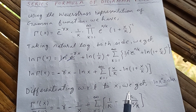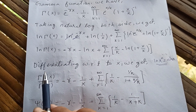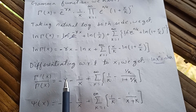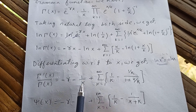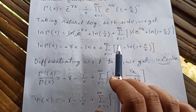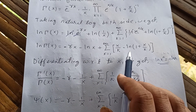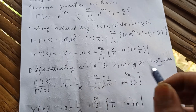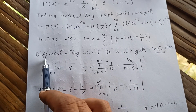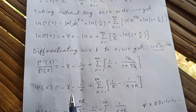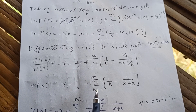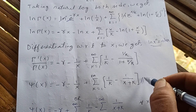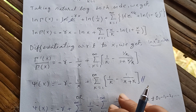Now differentiating with respect to x, we get gamma prime of x over gamma of x — which is the digamma function. Differentiating the right side: negative gamma, minus one over x, and in the sum: one over k minus, differentiating the log term gives one over one plus x over k times one over k. Simplifying, the digamma of x equals negative gamma minus one over x plus the sum from k equals one to infinity of one over k minus one over x plus k.